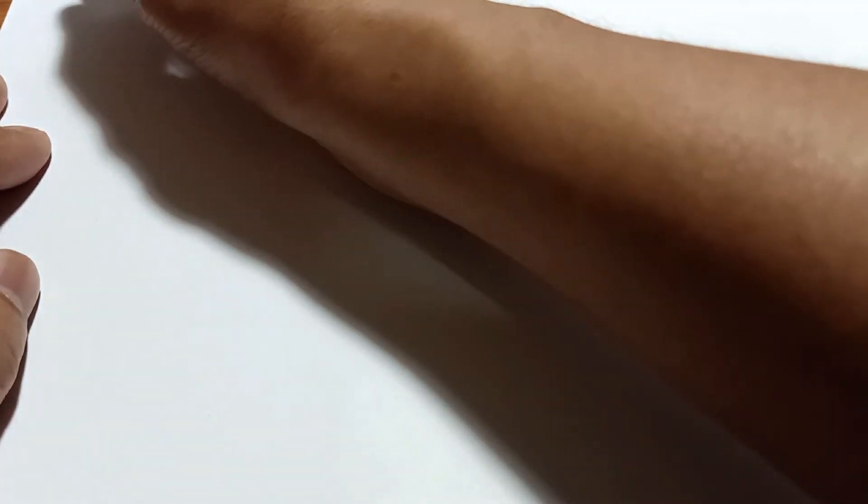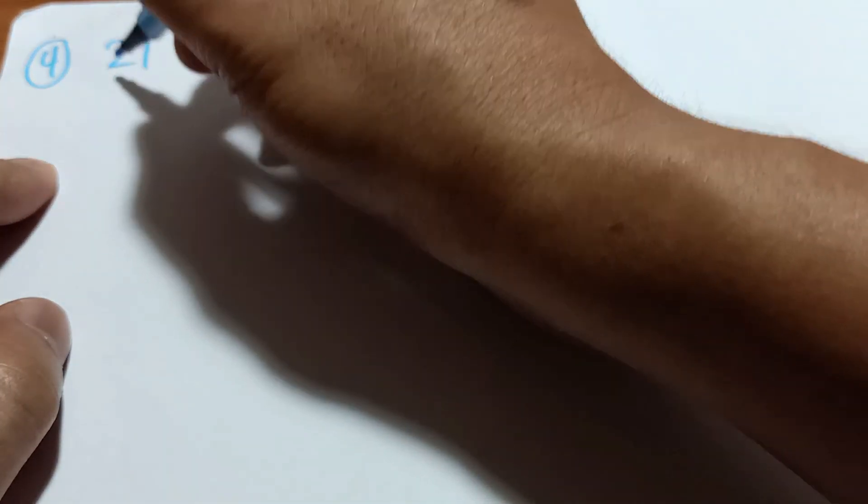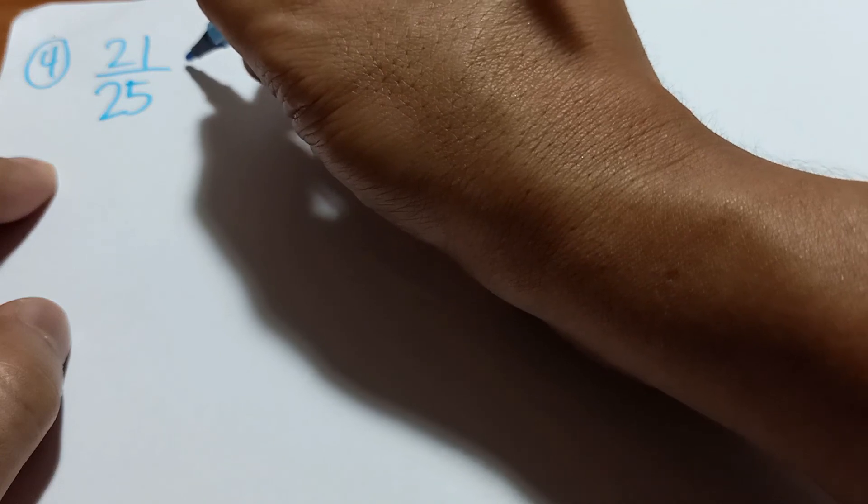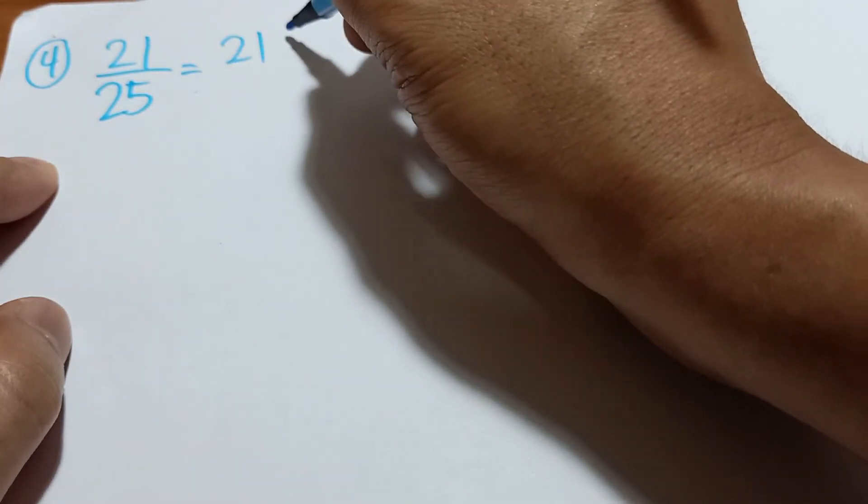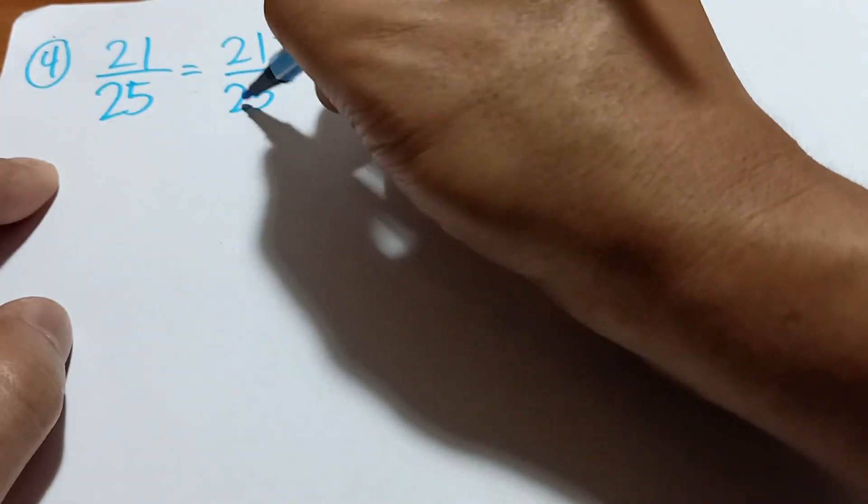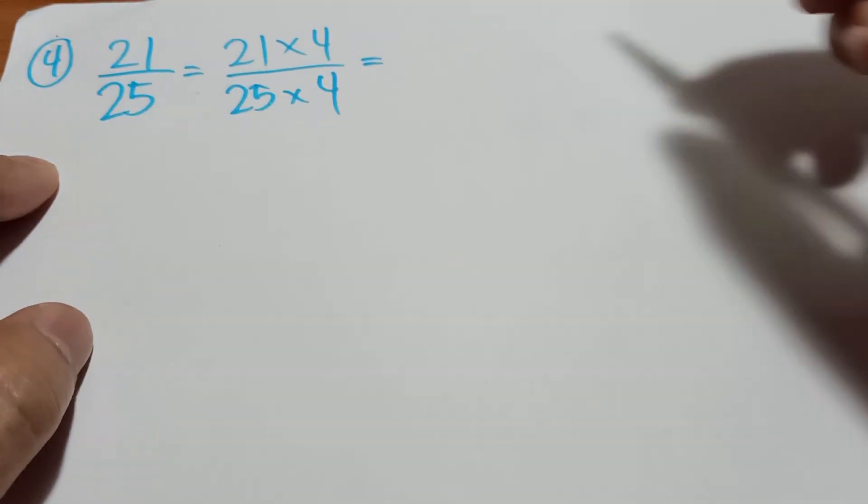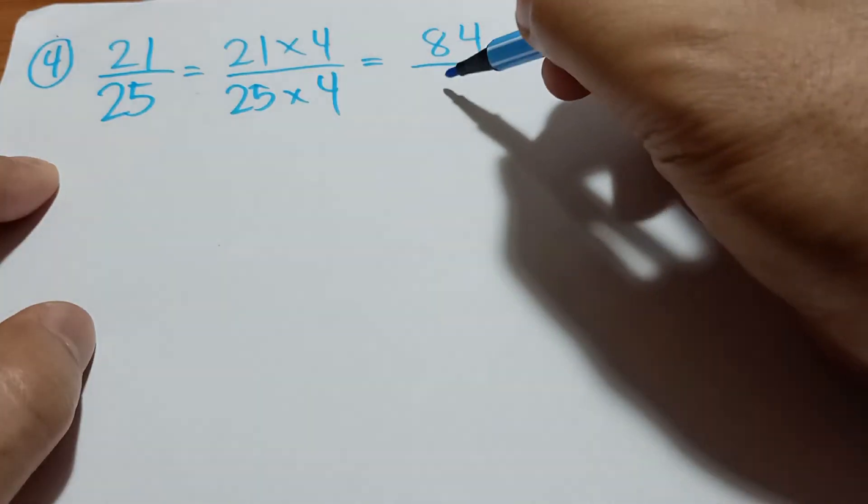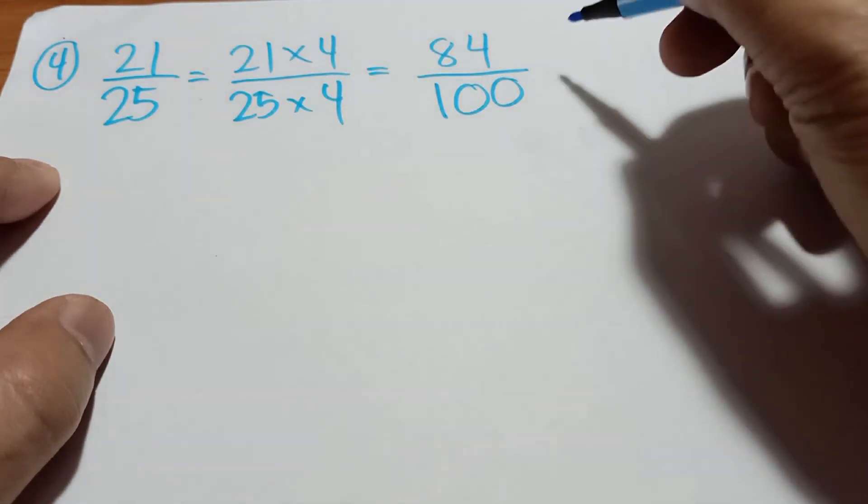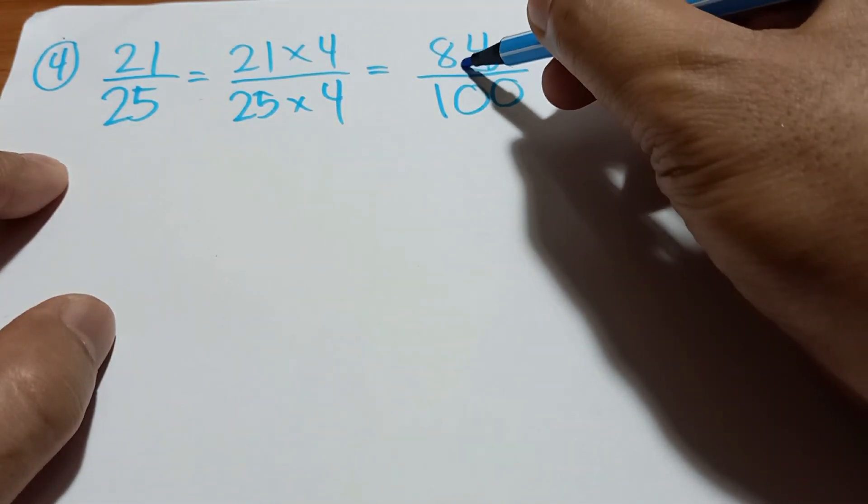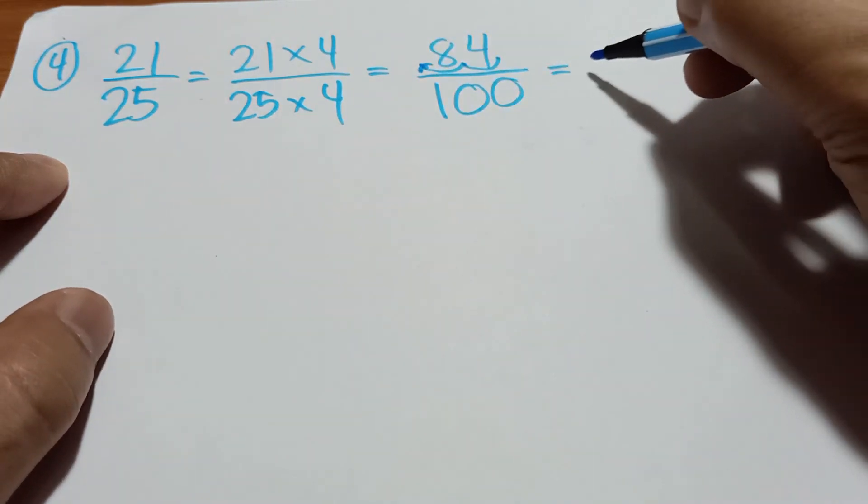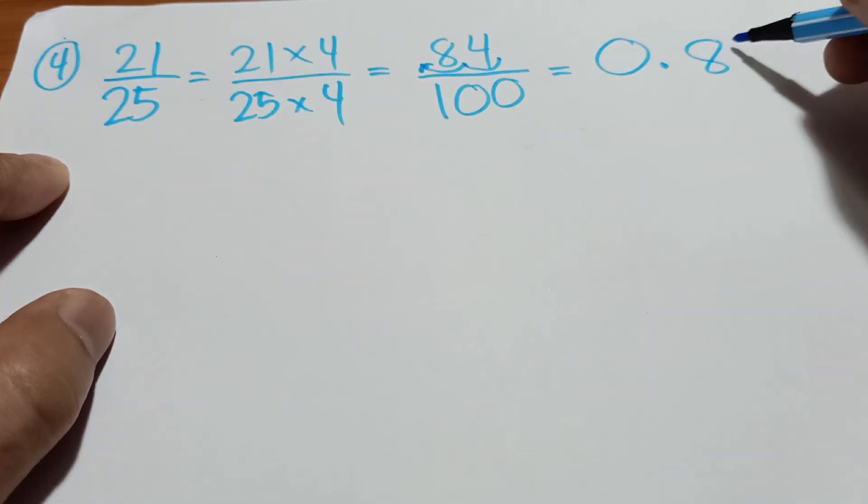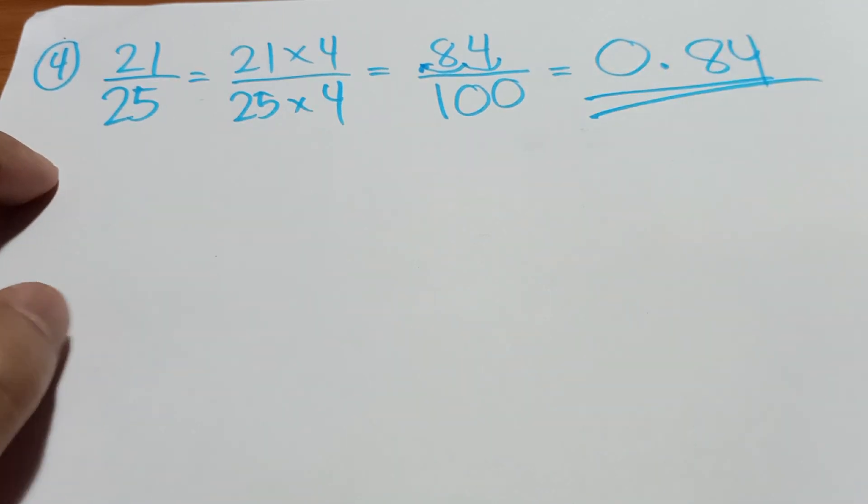So let's take the last example, number 4. If you have 21 divided by 25. So again, 21 times 4 over 25 times 4. So it will become 84 over 100. Then just move the point going to the left 2 times or twice. So the answer will become 0.84.